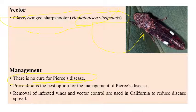The glassy-winged sharpshooter problem is particularly severe in California and other major wine-growing areas such as France and other highly developed vineyard regions.